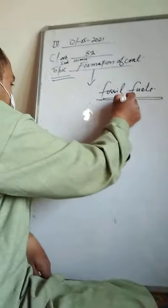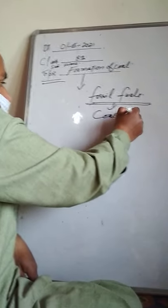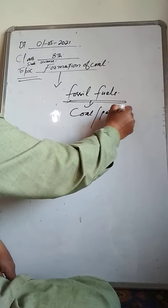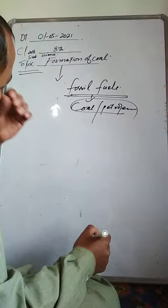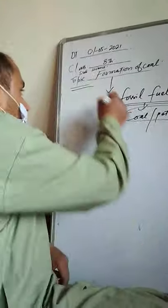And we learned that coal and petroleum are examples of fossil fuels. Today our topic is formation of coal.